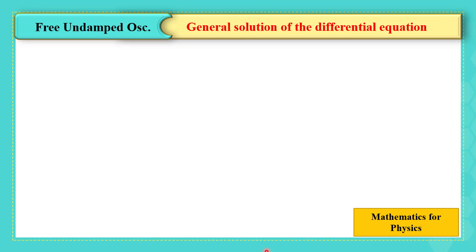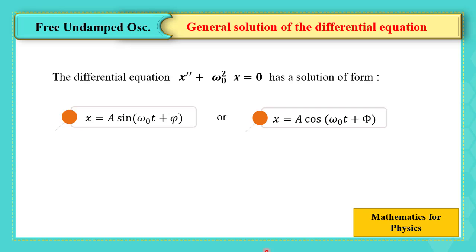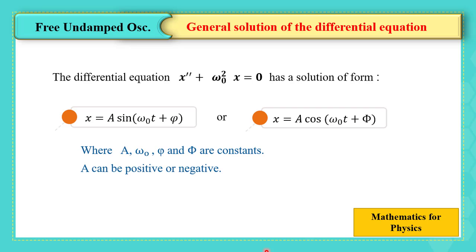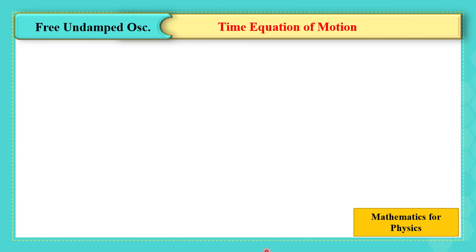Now the second question you may ask is: how can this differential equation help us in studying motion? This differential equation has a solution, and this solution is of the form either x equals a sine of (omega 0 t plus phi), or x equals a cosine of (omega 0 t plus phi), where a, omega 0, and phi are constants. A can be positive or negative. This solution is called the time equation of motion, where x is a function of time.